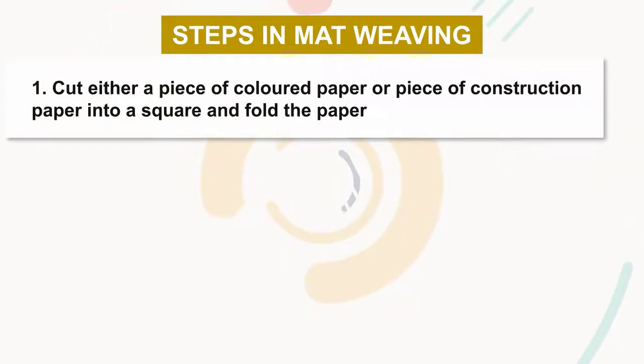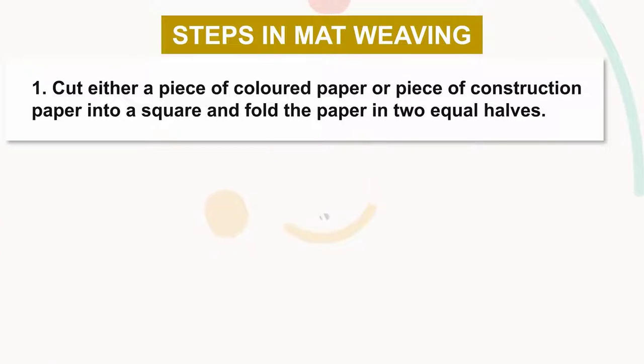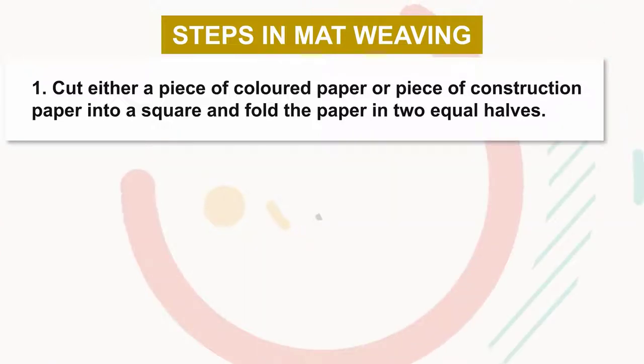Steps in mat weaving. Step one: cut either a piece of colored paper or a piece of construction paper into a square, and fold the paper into equal halves.